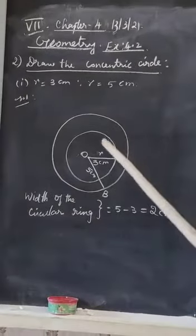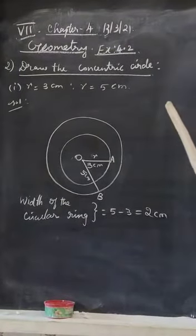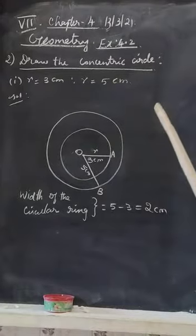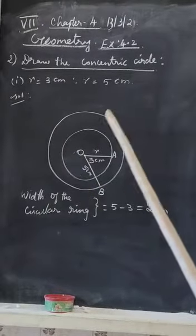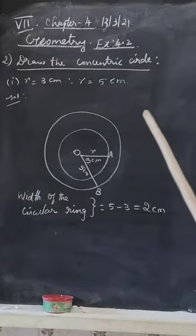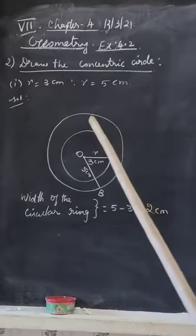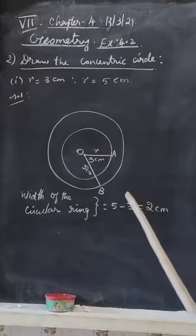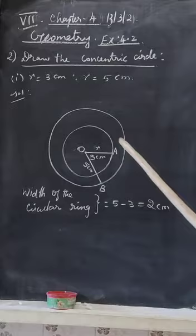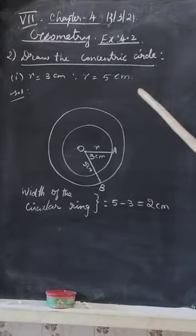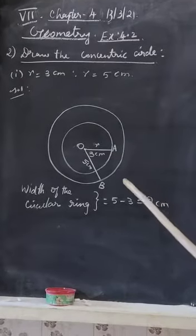Students, see the next one. Draw the concentric circle. This is Exercise 4.2, the second problem is to draw the concentric circle. Two radius values are given, you have to draw the circular ring. The radius r = 3 centimeters and r = 5 centimeters.